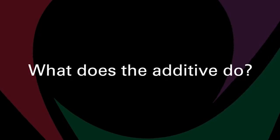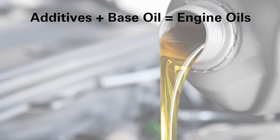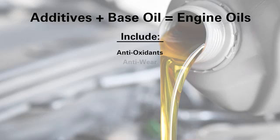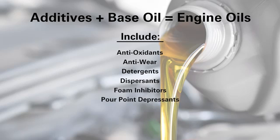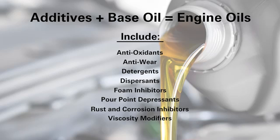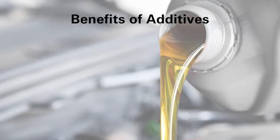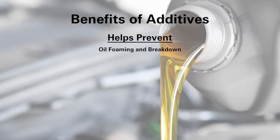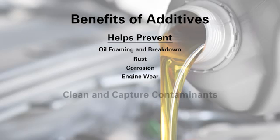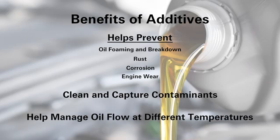What does the additive do? Additives need to work synergistically with base oil to provide desired performance and include things like antioxidant, anti-wear, detergents, dispersants, foam inhibitor, pour point depressant, rust and corrosion inhibitors, and viscosity modifiers. To simplify: additives help prevent oil foaming and breakdown, rust, corrosion, and engine wear. They also clean and capture contaminants and help manage oil flow at different temperatures. Finding the right balance is the difference between making a good product and a great product.